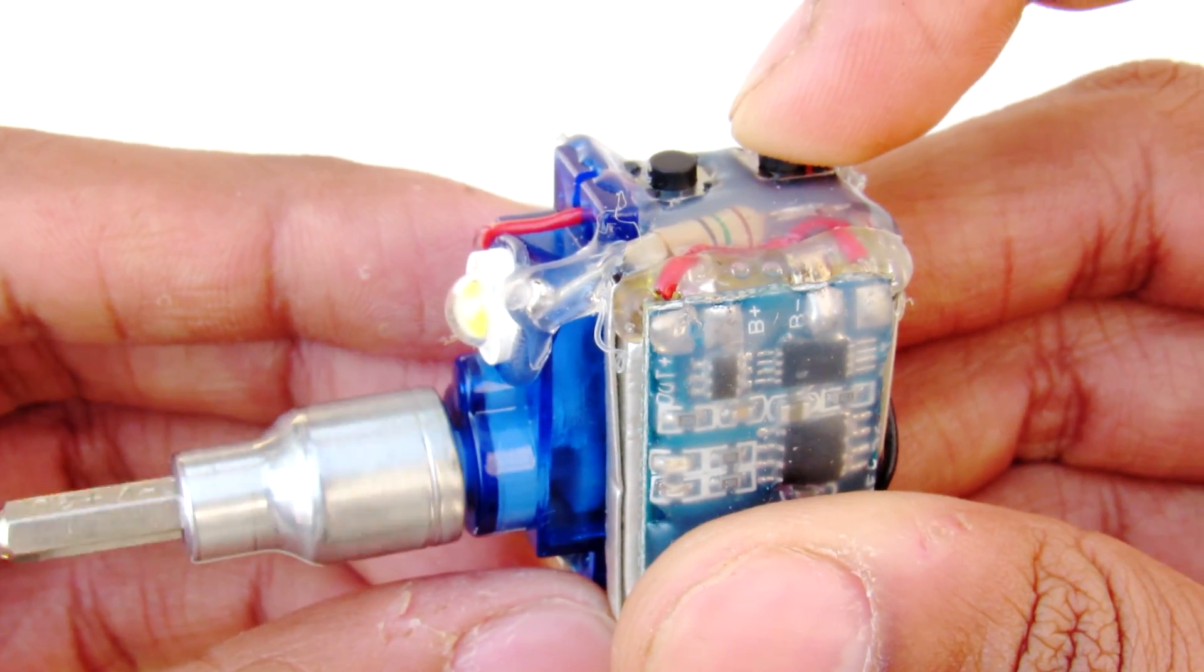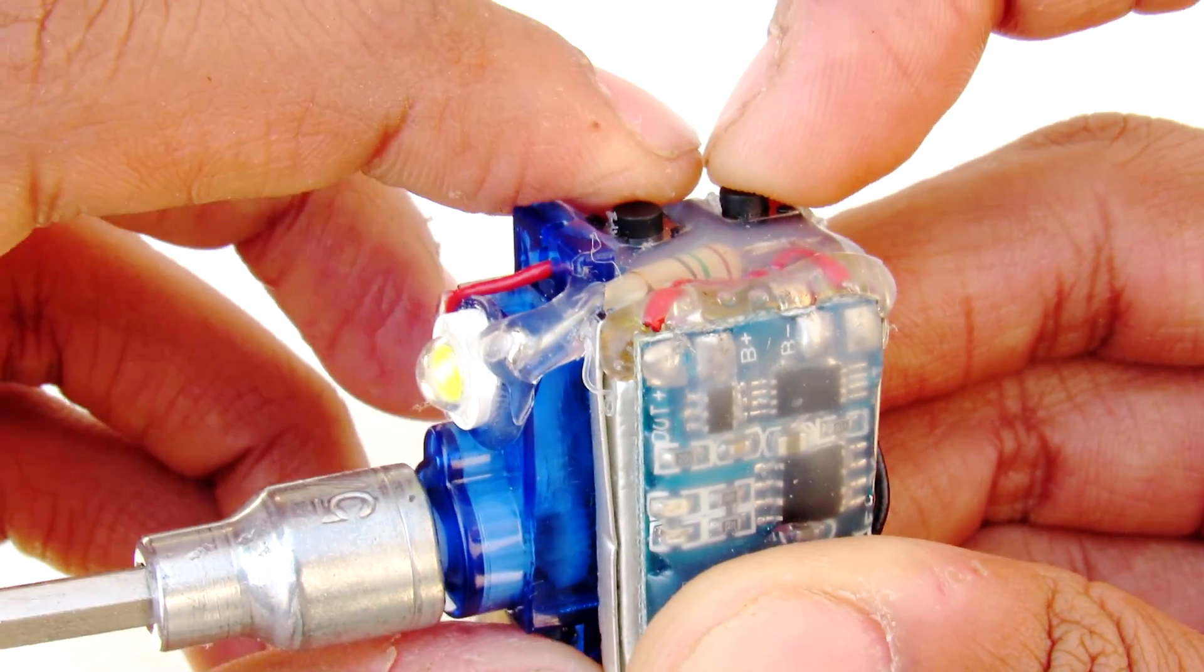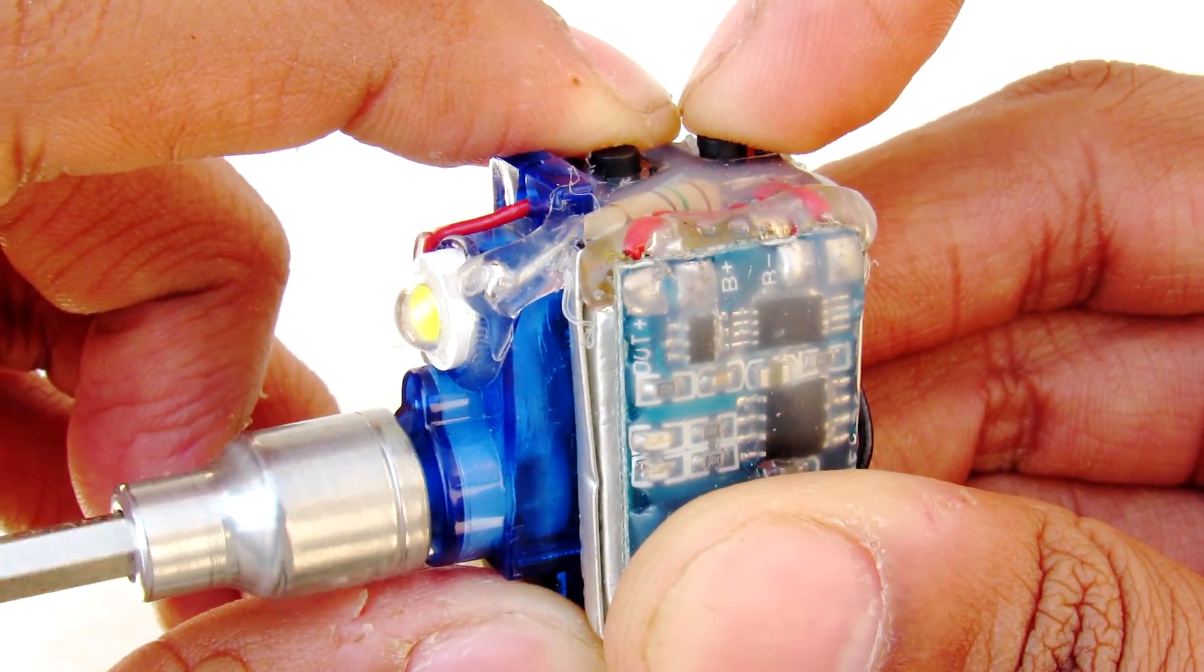Consider the fact that the screwdriver only consumes 300mA of current. In normal use this battery will last for 1 hour of continuous use, and this is the same for the flashlight.